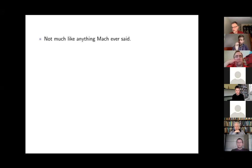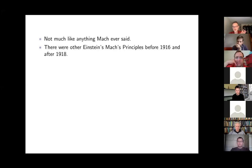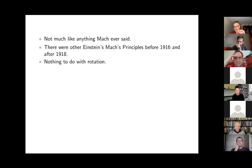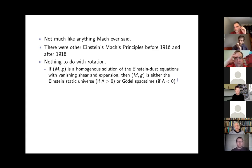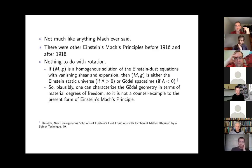Some points about this: it's not like anything Mach ever said. There were other Einstein's Mach's principles before 1916 and after 1918, and this one has nothing to do with rotation. A way of seeing that it has nothing to do with rotation is to note that if you've got a Lorentzian manifold that's a homogeneous solution to the Einstein dust equations with vanishing shear and expansion, then that geometry is either the Einstein static universe or Gödel spacetime, depending on the sign of the cosmological constant. So that's telling you that you can characterize Gödel's geometry in terms of the material degrees of freedom, so it's not going to be a counterexample to this form of Mach's principle.